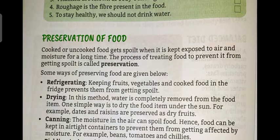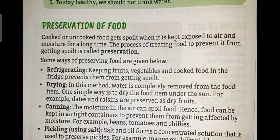Hello children. In a previous class we have learned about various types of foods, food components, vitamins, fats, and balanced diet. In this class we are going to learn about the preservation of food — how foods are preserved. Cooked or uncooked food gets spoiled when it is kept exposed to air and moisture for a long time. The process of treating food to prevent it from getting spoiled is called food preservation.